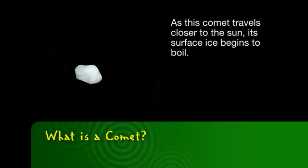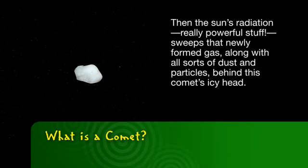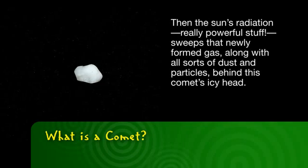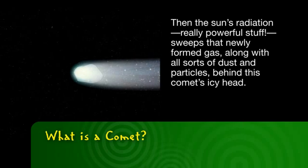As this comet travels closer to the Sun, its surface ice begins to boil. Then the Sun's radiation, really powerful stuff, sweeps that newly formed gas along with all sorts of dust and particles behind this comet's icy head.